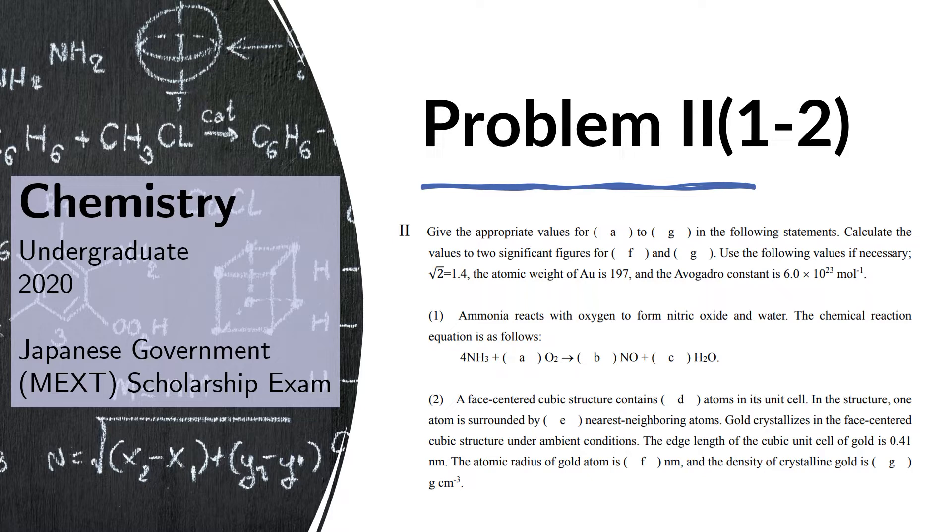Question 2. A face-centered cubic structure contains D atoms in its unit cell. In the structure, one atom is surrounded by E nearest neighboring atoms.